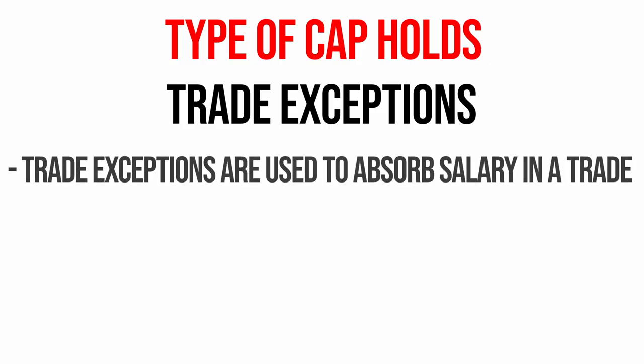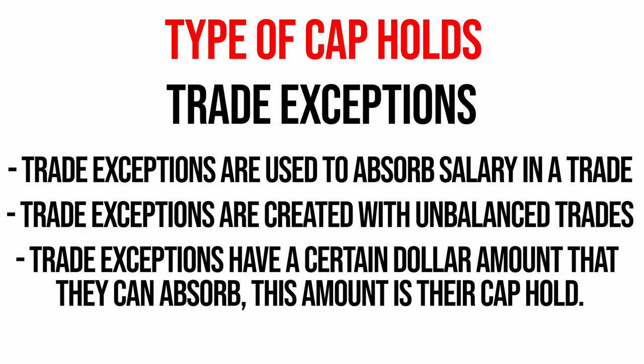The next thing that counts as a cap hold are trade exceptions. If you made any unbalanced trades where you sent out more money than you took in and have not used those exceptions yet, they count as a hold against your salary cap. For example, if the salary cap is 122 million and you had 110 million in salary but a 20 million dollar trade exception, you are not actually under the cap — you have 130 million towards the cap. So trade exceptions have to be renounced in order to get cap space, and it might not be wise to renounce valuable trade exceptions just to get a similar or lesser amount of cap space.